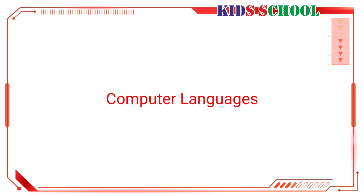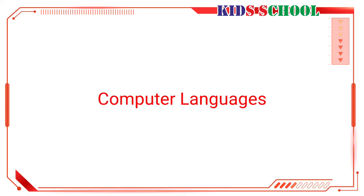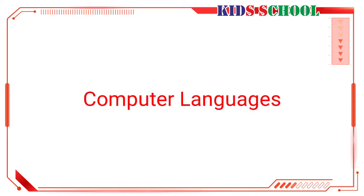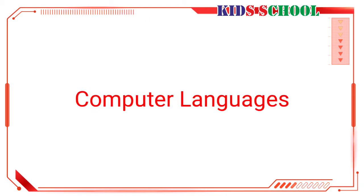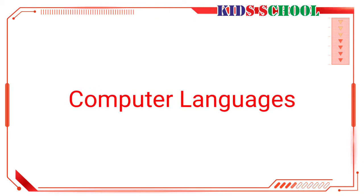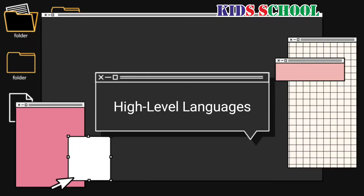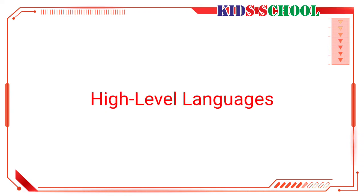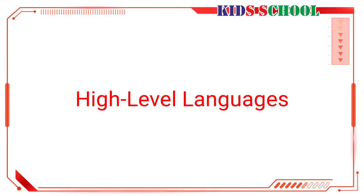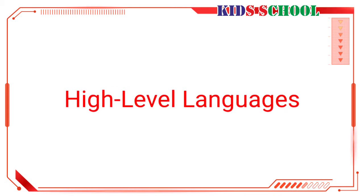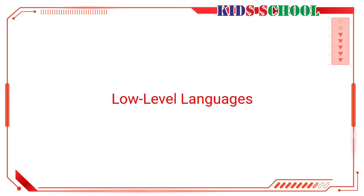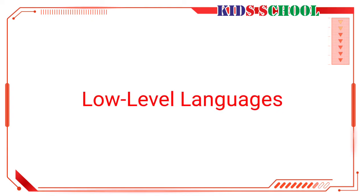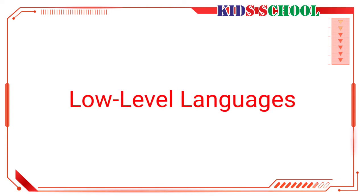Now let's see computer languages. Computers can understand only those instructions that are written in binary code, but writing programs in binary code takes a very long time. So computer languages that use decimal numbers, words, and symbols have been developed. These are then converted into binary code by special programs. There are two main types: high-level languages, which are easy to learn and converted using an interpreter or compiler; and low-level languages, which use abbreviations and are converted using an assembler.